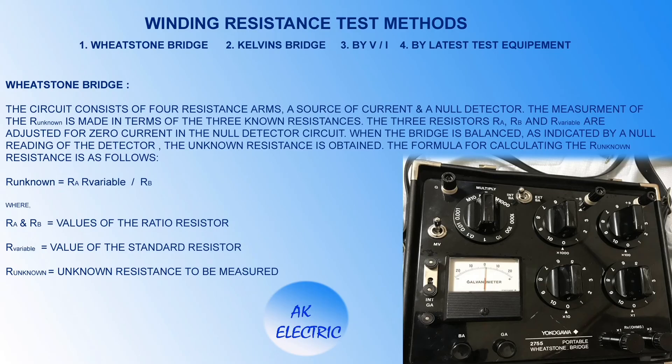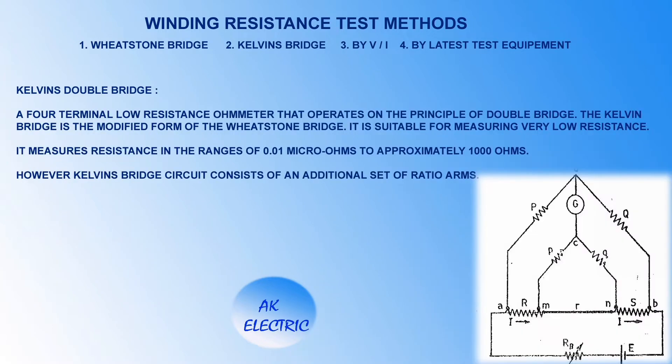Winding resistance test can be done by Wheatstone Bridge and Kelvin's Bridge. These two methods do not inject any current to windings — it is direct measurement of resistance from windings. These methods are very accurate for resistance measurement, but for some other reasons many countries and most companies have started using latest digital test equipment.